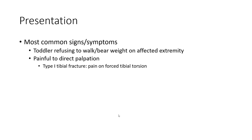More common signs are the toddler refusing to walk, bearing weight on the affected extremity, painful to direct palpation. Type 1: tibia fracture — pain on posterior tibia torsion.